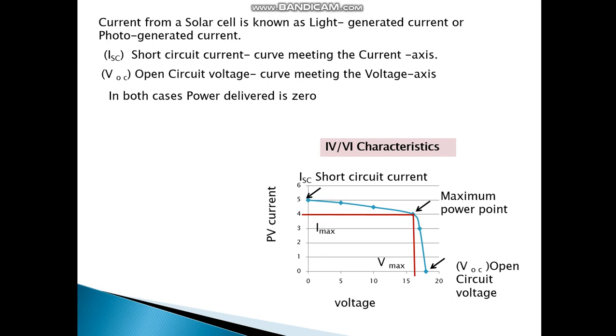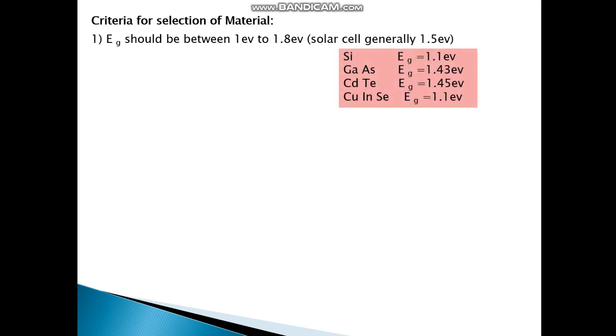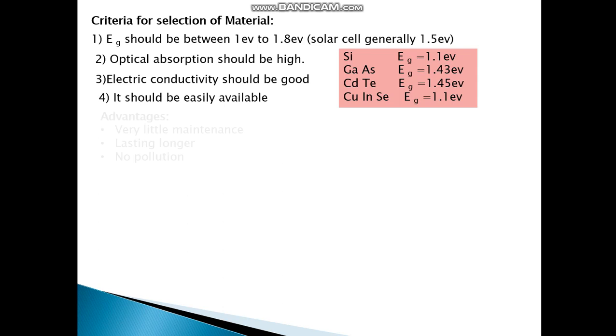Now there's the Vmax, the Imax. Power delivery is maximum. PL is equal to Imax into Vmax. Criteria for selection of the material: Eg should be between 1eV to 1.8eV, solar cell generally 1.5V. Optical absorption should be high. Electric conductivity should be good. It should be easily available.